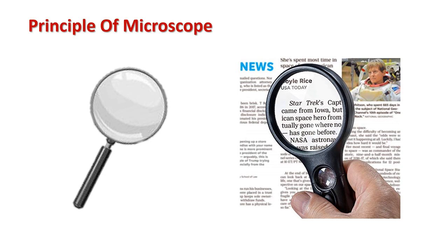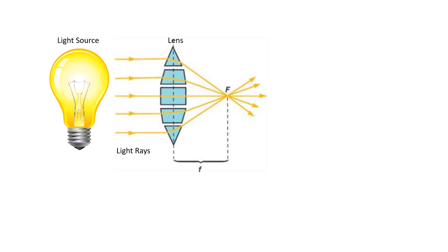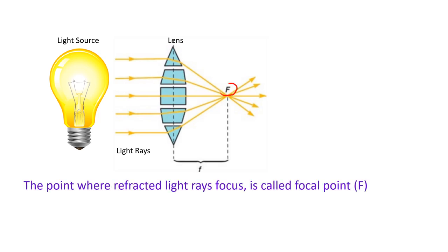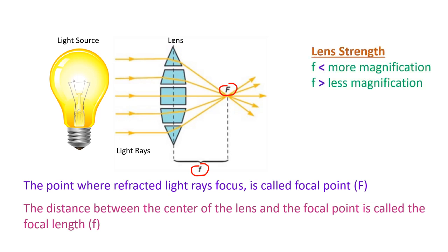To understand the compound microscope principle, we first need to understand how a simple microscope or magnifying glass works. In a magnifying glass, the lens is a convex lens whose surface is always curved. When light falls on the surface, it bends. When a light source is distant from the lens, parallel light rays fall on the lens surface and the lens focuses them on one specific point called the focal point, represented by capital F. The distance between the center of the lens and the focal point is called the focal length, represented by small f. Lens strength is related to focal length — a lens with a short focal length magnifies an object more than a lens with a longer focal length.